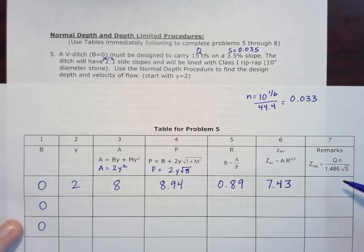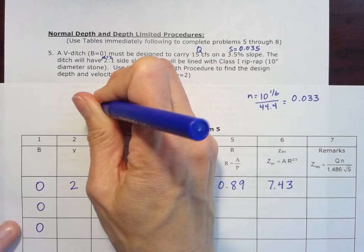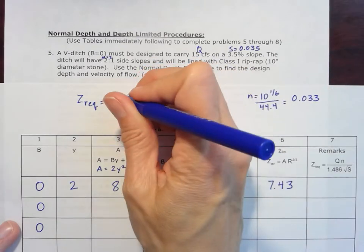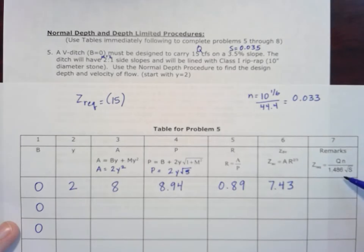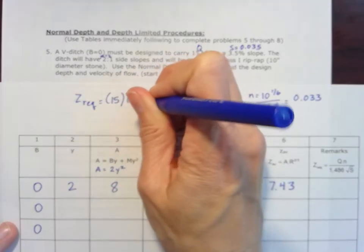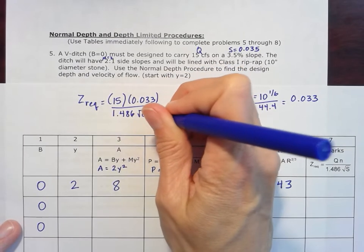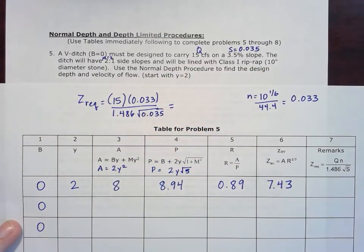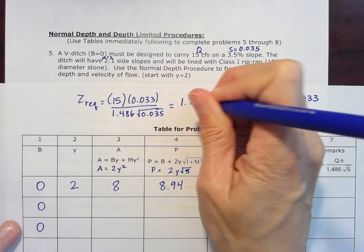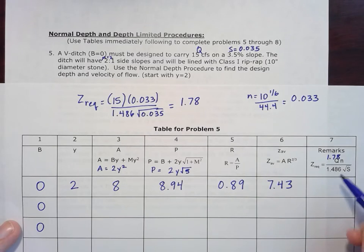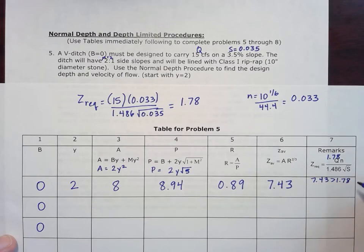What we want to do is compare that to this z required. We get this from the Manning equation, rewriting that for this z term here. It's going to be q times n divided by 1.486 times the square root of the slope. Z required, q I was given originally, that's the 15 CFS, times 0.033, divided by 1.486 times the square root of 0.035. So I put all that into the equation, and we get a z required of 1.78. Once we get to our z average, we compare it to our z required. In this case, 7.43 is greater than 1.78. So we're too deep here.